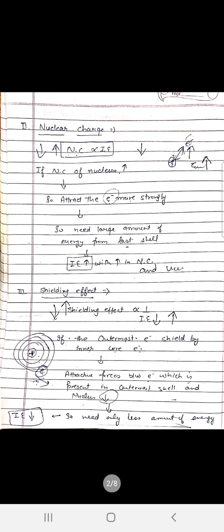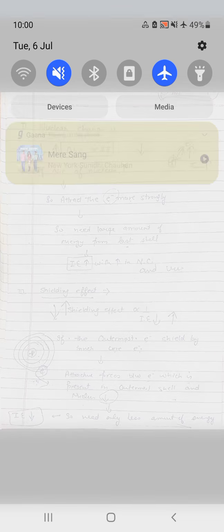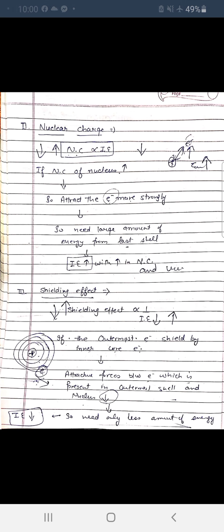The second factor is nuclear charge. Ionization enthalpy is directly proportional to nuclear charge. When the nuclear charge on the nucleus increases, the attraction power between the nucleus and the electron becomes very strong — positive and negative attract strongly. We need a large amount of energy to remove the last shell electron. So as nuclear charge increases, ionization enthalpy increases, and vice versa.